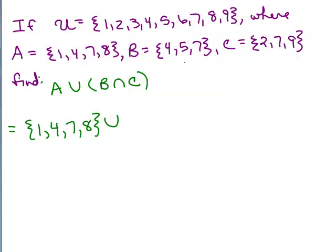And B intersects C. I can easily see what that's going to be. I look at both B and C and I see if they have any elements in common. They don't both have a four or a five, but they do have a seven in common. So, seven.